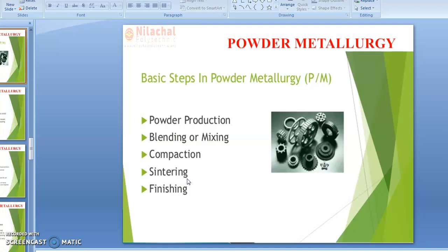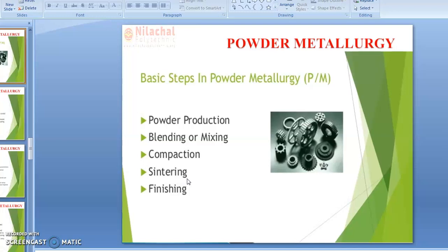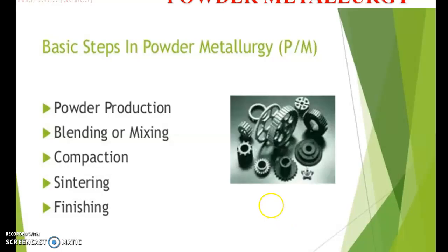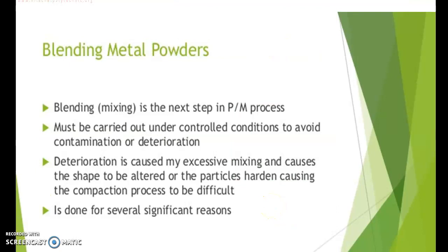In powder metallurgy, first the specially selected powder is compressed in dies under pressure. After that, the half-finished part gets strengthened as a result of high-temperature treatment called sintering, which is conducted at a temperature below the melting point of the basic metal in the mixture.